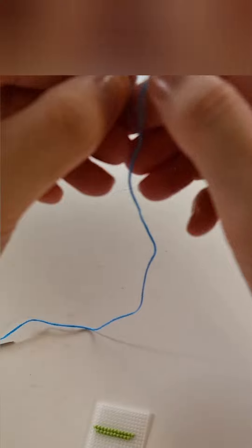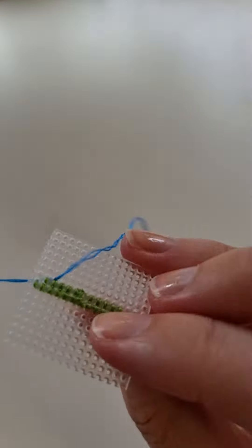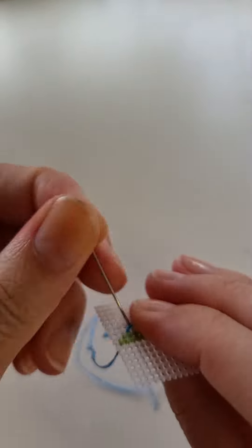Keep going with the rest of your rainbow colors remembering to separate out two threads from each skein at a time. Make sure you also catch the tail of your thread each time you start a new color.